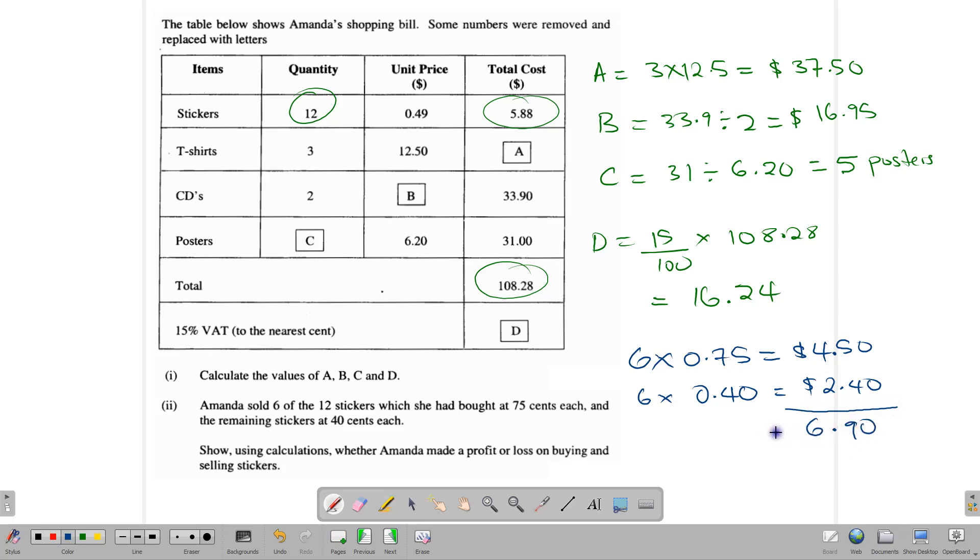So the total amount of money she makes from selling the stickers turns out to be $6.90. Now this $6.90 is her selling price. So the selling price is $6.90, and the cost price was $5.88. So she has made a profit, but just to make that more concrete...